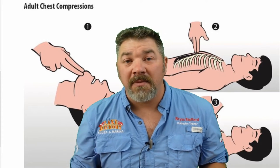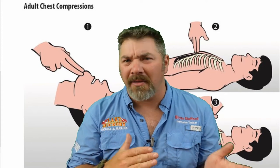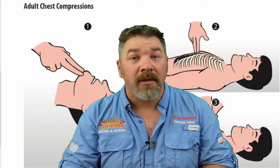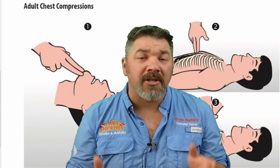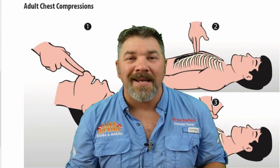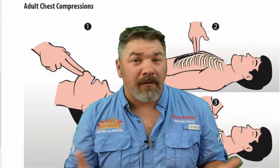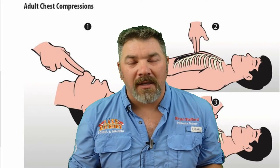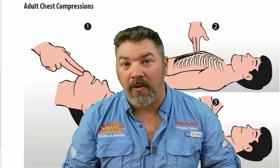It helps to count out loud. In the old 30-to-2 method, that was 30 compressions to 2 breaths — you'd count out loud 1, 2, 3 all the way to 30, then perform two rescue breaths. Nowadays we don't do rescue breaths unless you have a face shield, pocket mask, or bag valve mask. If you're the only one present you may still need to do that 30-to-2 ratio, but if there are multiple rescuers you can continuously perform compressions at a rate of 120 beats per minute.